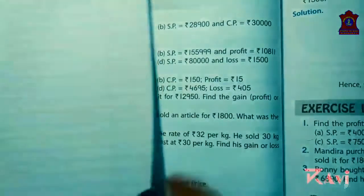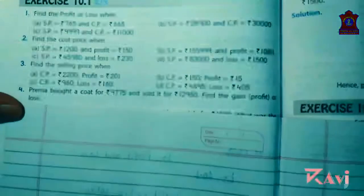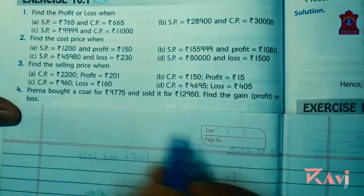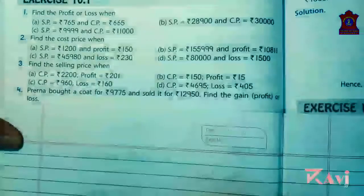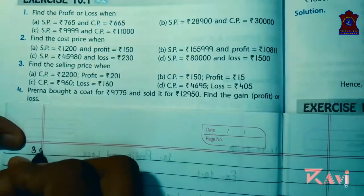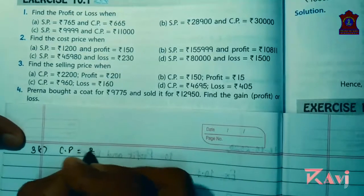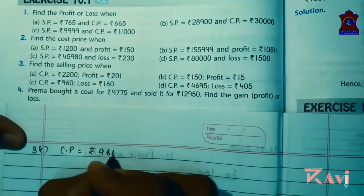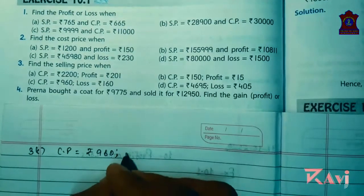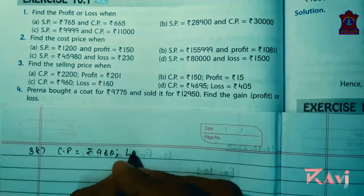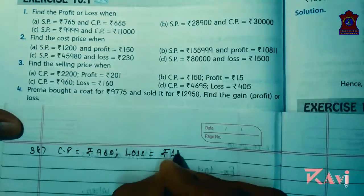Let's do question number three C. CP equals rupees 960 and loss is rupees 160.